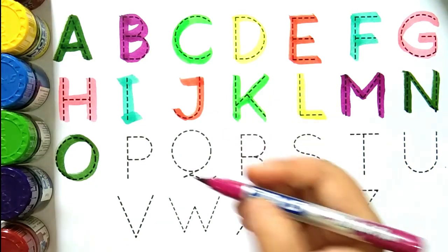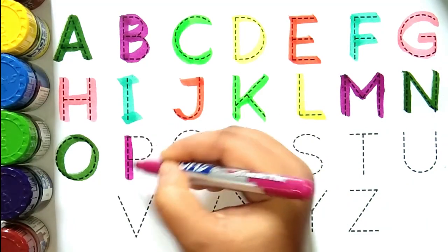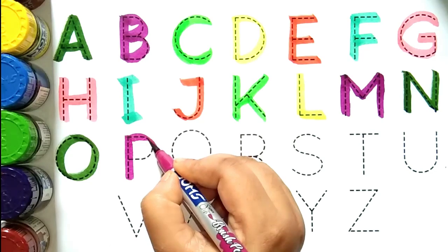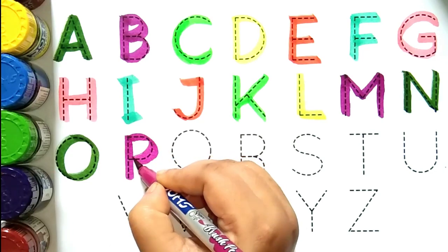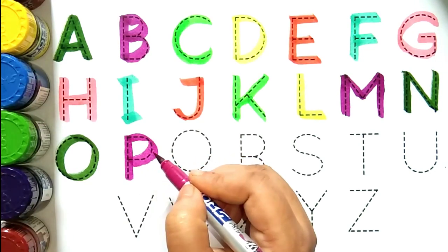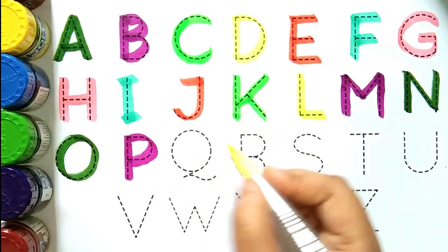Magenta color. P, P for peacock. P for kya hota hai bachon? P for peacock.